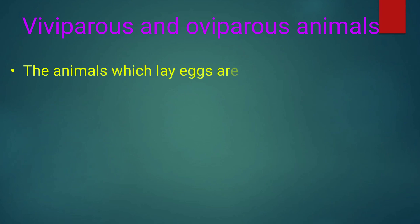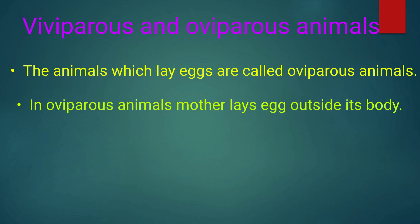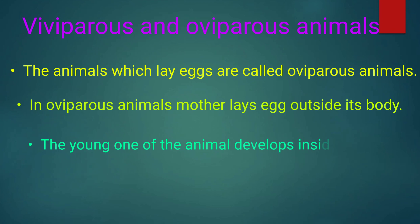The animals which lay eggs are called oviparous animals. In oviparous animals, the mother lays eggs outside its body. The young ones of the animals develop inside the egg.